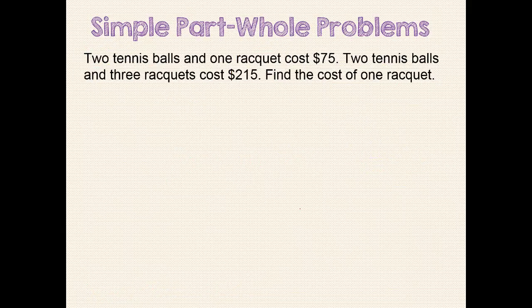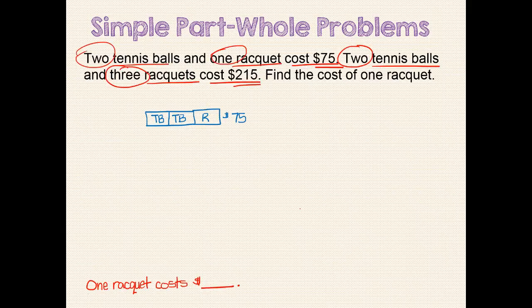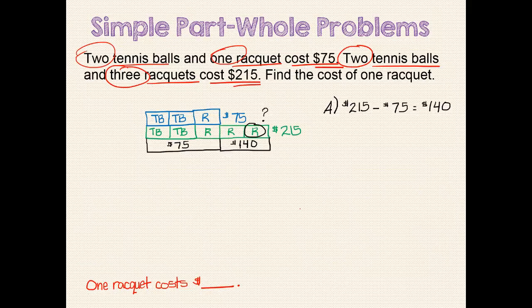Here's another problem that's similar to the last one. Try modeling and solving it on your own. Pause the video to work the problem, then start the video to compare your solution to mine. Did you start your model like this? Or does yours look different? Do you have a second model, something like this? Did you find the difference in cost between the two models? Did you find that one racket cost $70?